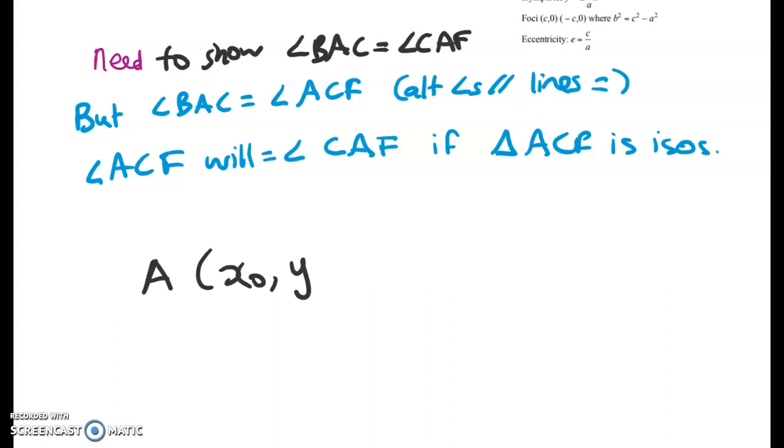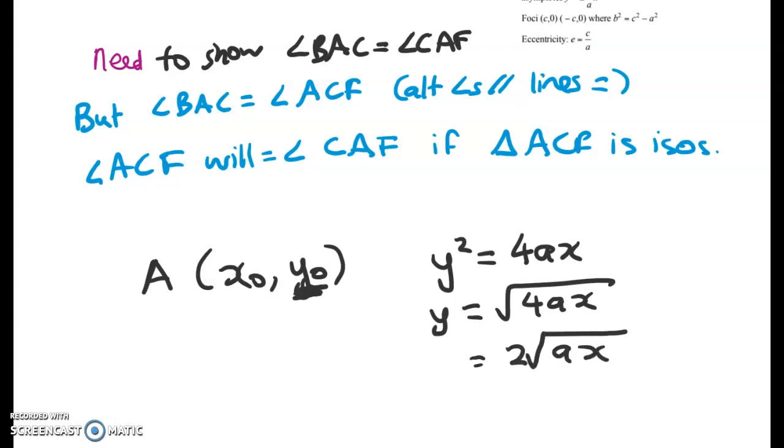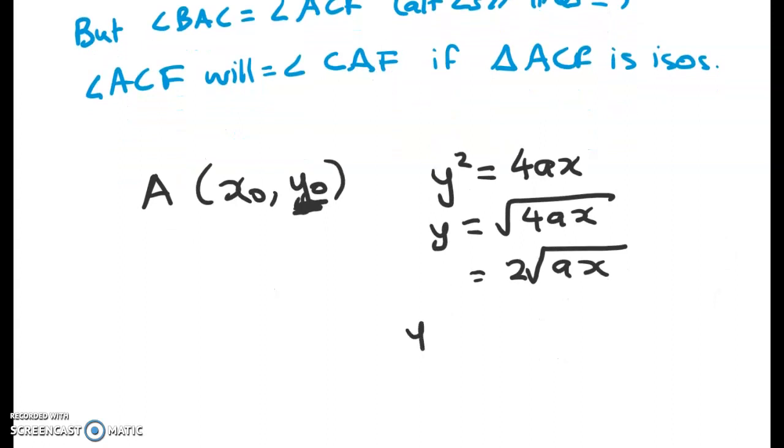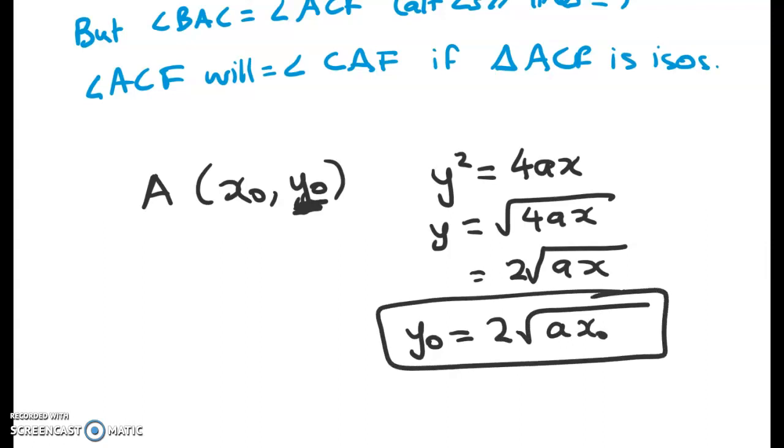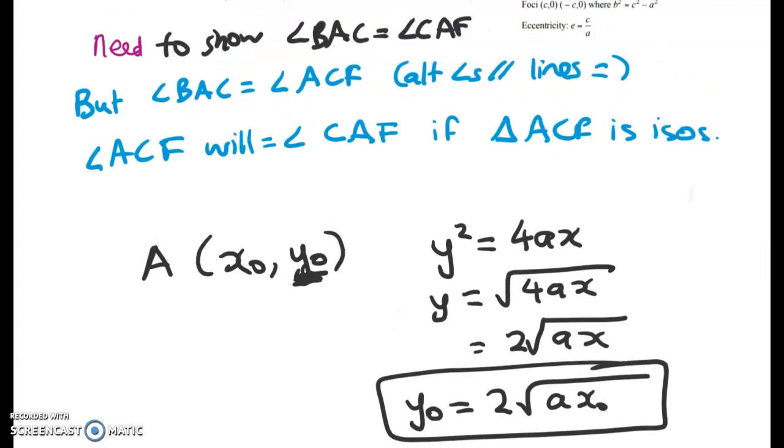So A is (x₀, y₀), but we'd like to get this in terms of x because we're going to find the equation of the tangent line. So y squared equals the square root of 4ax, which is 2√(ax). So at the point x₀, y₀ will equal 2√(ax₀). So we've got that, so that's going to be very useful.